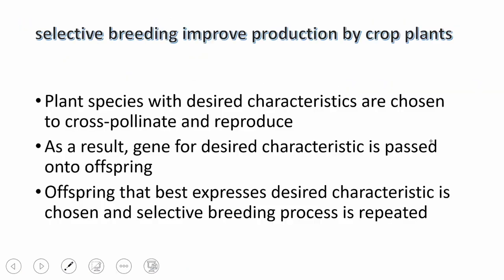Selective breeding can also be done for plants to improve crop quality. Plant species with desired characteristics are chosen to cross-pollinate and reproduce. The genes from these plants are passed on to offspring, and we keep repeating the process until we get the highest quality of crops that we want.